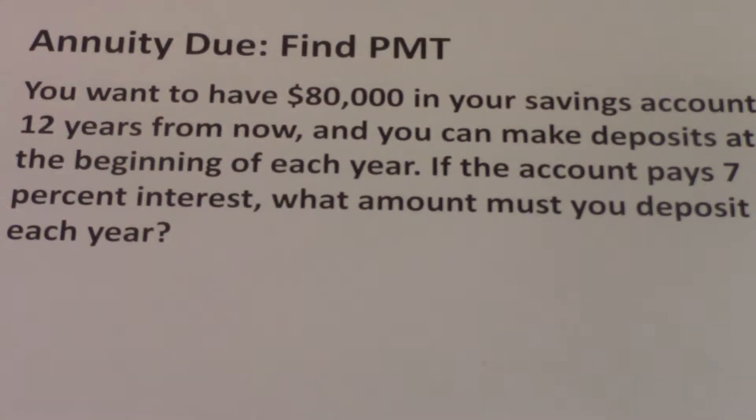You want to have $80,000 in your savings account 12 years from now. You can make deposits at the beginning of each year. If the account pays 7% interest, what amount must you deposit each year?